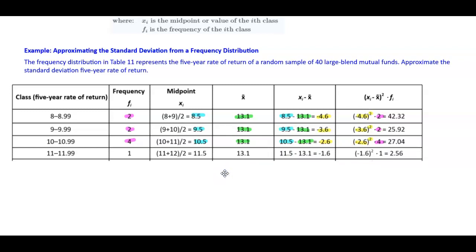The class 11 to 11.99 has a frequency of 1. The midpoint is 11.5 and the sample mean is 13.1. Taking 11.5 minus 13.1 gives negative 1.6. Negative 1.6 squared times the frequency of 1 gives 2.56.